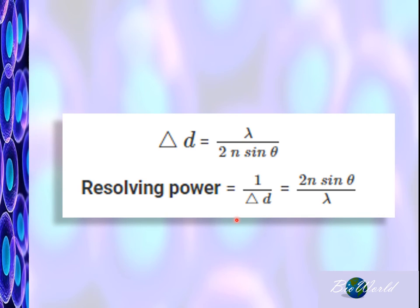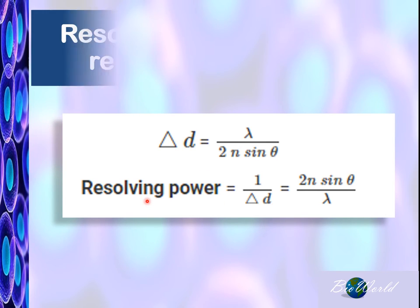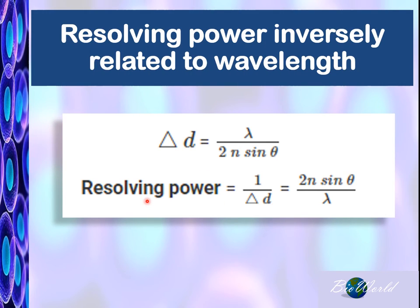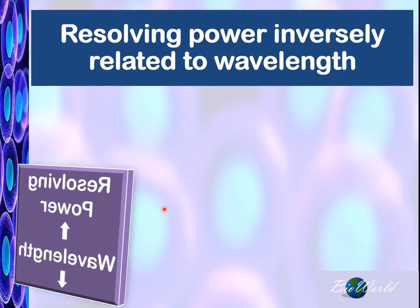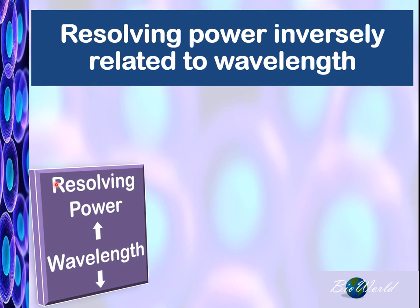Now how do we improve the resolving power of the microscope so as to get a clearer image? From the formula you can see that the resolving power is inversely related to the wavelength of light used. So that means if we want to improve resolving power, we have to use wavelengths of light that are small.